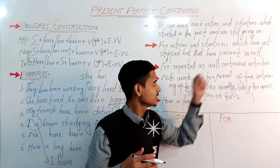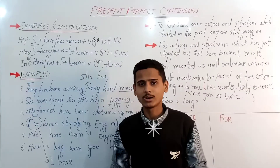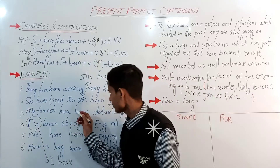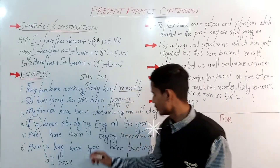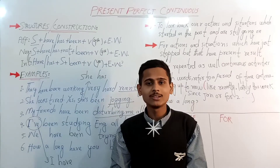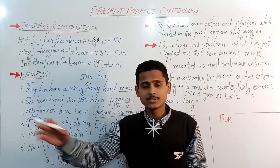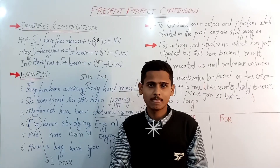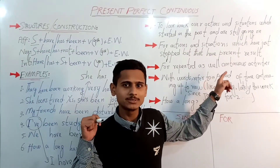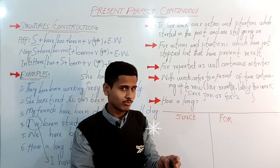The third usage: we use present perfect progressive for repeated as well as continuous activities. The typical example is: 'My friends have been disturbing me all day.' Here we emphasize the continuous or repeated nature — my friends have been disturbing me either continuously throughout the day, or they have repeatedly disturbed me many times throughout the day.